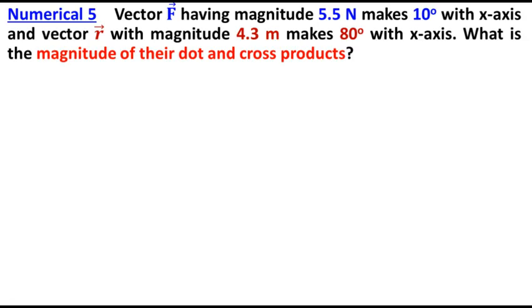Numerical 5: Vector F having magnitude 5.5 Newton makes 10 degree angle with x-axis and vector r with magnitude 4.3 meter makes 80 degree with x-axis. What is the magnitude of their dot and cross products?